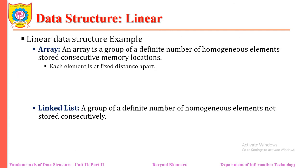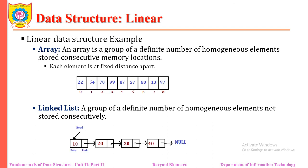Examples of linear data structure are array and linked list. Arrays are a group of a definite number of homogeneous elements stored in consecutive memory locations — the third element has only one predecessor and one successor, so we traverse an array in a linear fashion. A linked list is a collection of nodes — a group of homogeneous elements not stored consecutively in memory, but arranged in linear fashion: after the first node we reach the second, then the third, then the fourth, and so on.